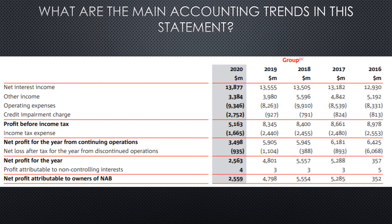I'm going to give you a series of exercises where you identify the main accounting trends. As a revision: the main trends from a statement of profit or loss are sales or net income, changes in expenses, and the change in net profit. I want you to look at the following scenario and determine what the main trends are, and whether those trends represent a positive or negative outcome for the business.